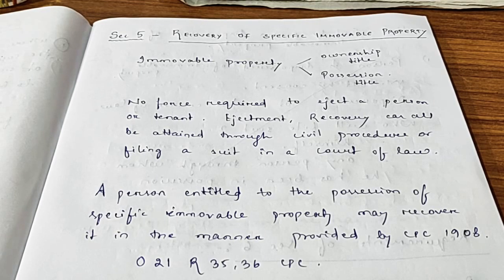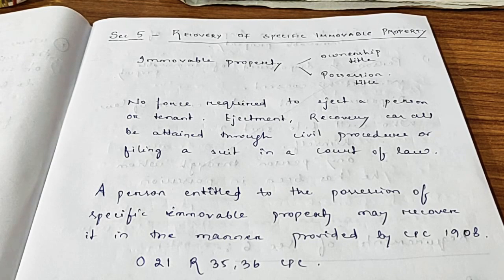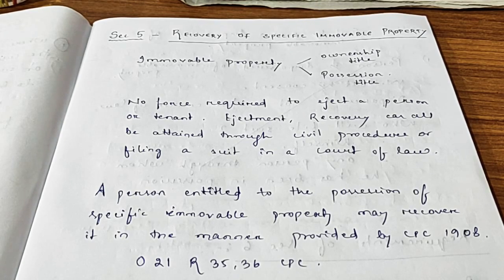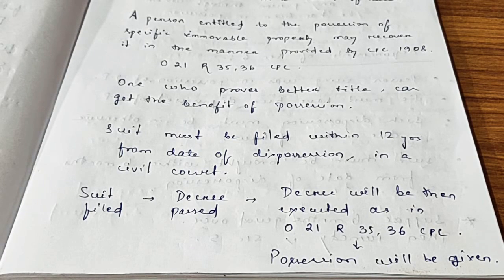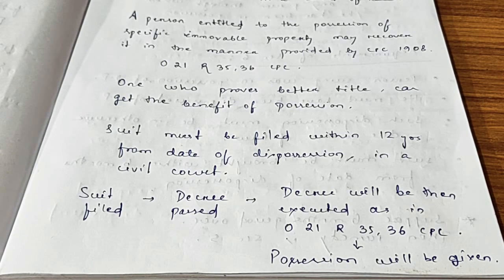Now let's see Section 5. It says a person entitled to the possession of specific immovable property may recover it in the manner provided by the Civil Procedure Code 1908. Under Section 5, one who proves the better title to the property can get the benefit of the possession of the property. This section mentions the procedure under CPC 1908.